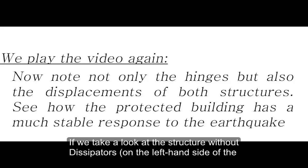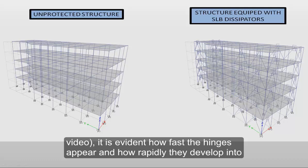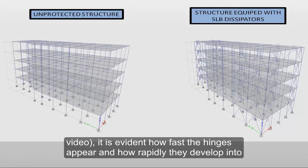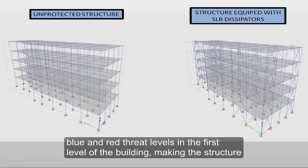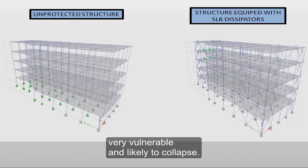If we take a look at the structure without dissipators, on the left-hand side of the video, it is evident how fast the hinges appear and how rapidly they develop into blue and red threat levels in the first level of the building, making the structure very vulnerable and likely to collapse.